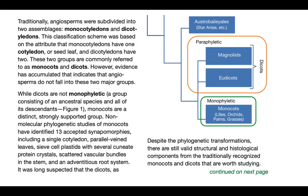We are looking at angiosperms, which are flowering plants, and dividing them into two separate groups: monocotyledons and dicotyledons. This is a classification system based on the cotyledon, or seed leaf — the leaf that emerges after the seed has been germinated. Mono meaning one singular leaf, and dicotyledons having two leaves.